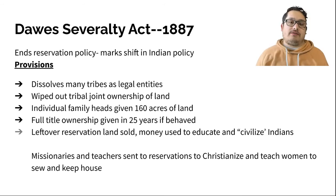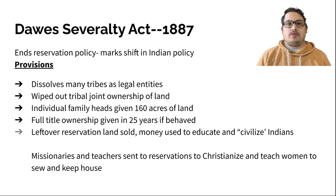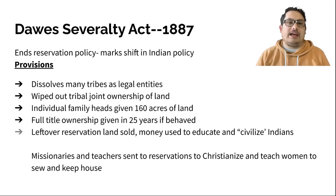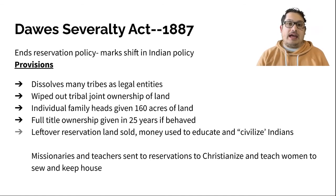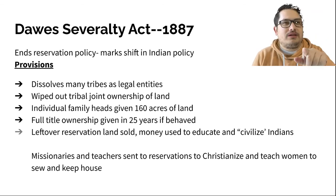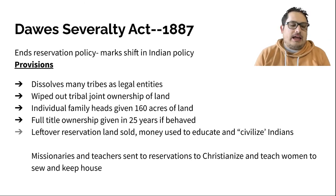The main focus of this is something called the Dawes Act or the Dawes Severalty Act — essentially a focus on assimilation, on encouraging Native Americans to assimilate. This moves against a reservation-type policy where they're in control of themselves and tries to bring them into the folds of America. They need to get rid of their tribes as legal entities, wipe out tribal joint ownership of land, and individual family heads will be given 160 acres of land with full ownership in 25 years if they behave. The leftover reservation land is going to be sold and that money used to educate and — quote — civilize Indians.